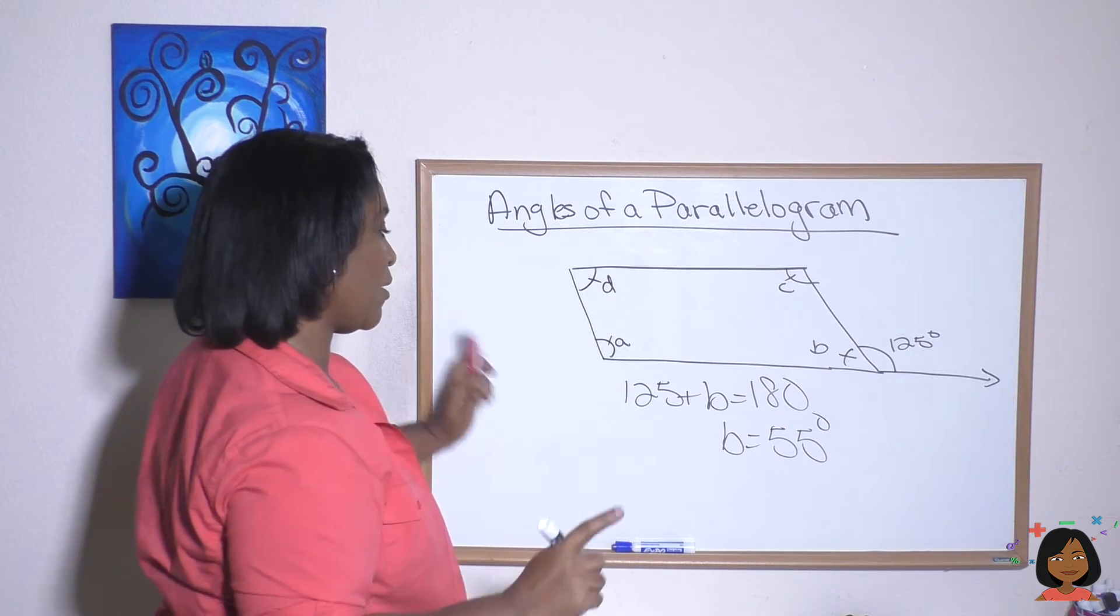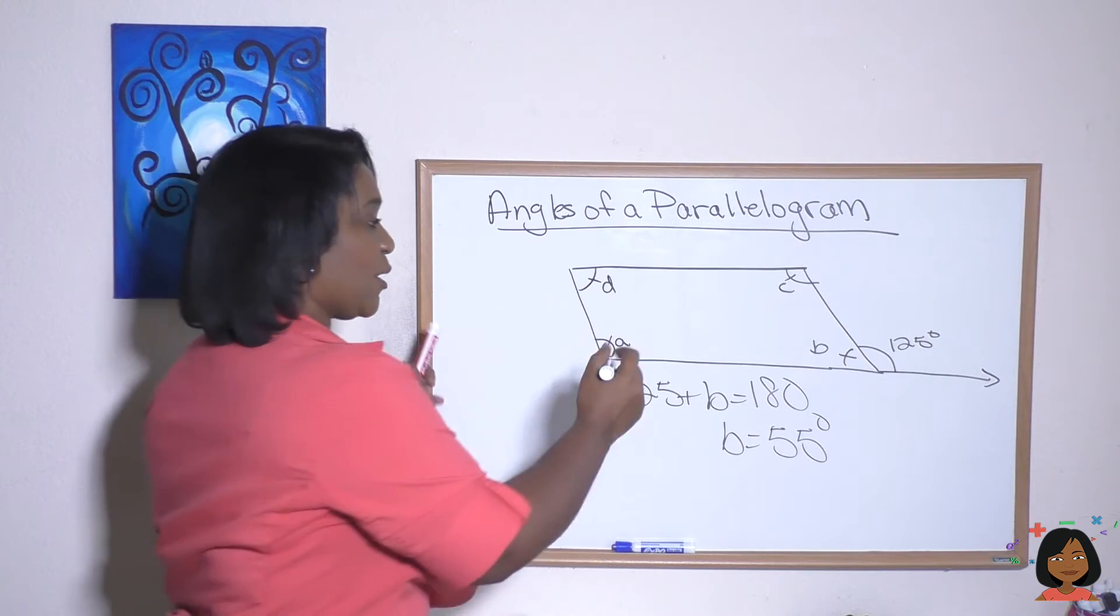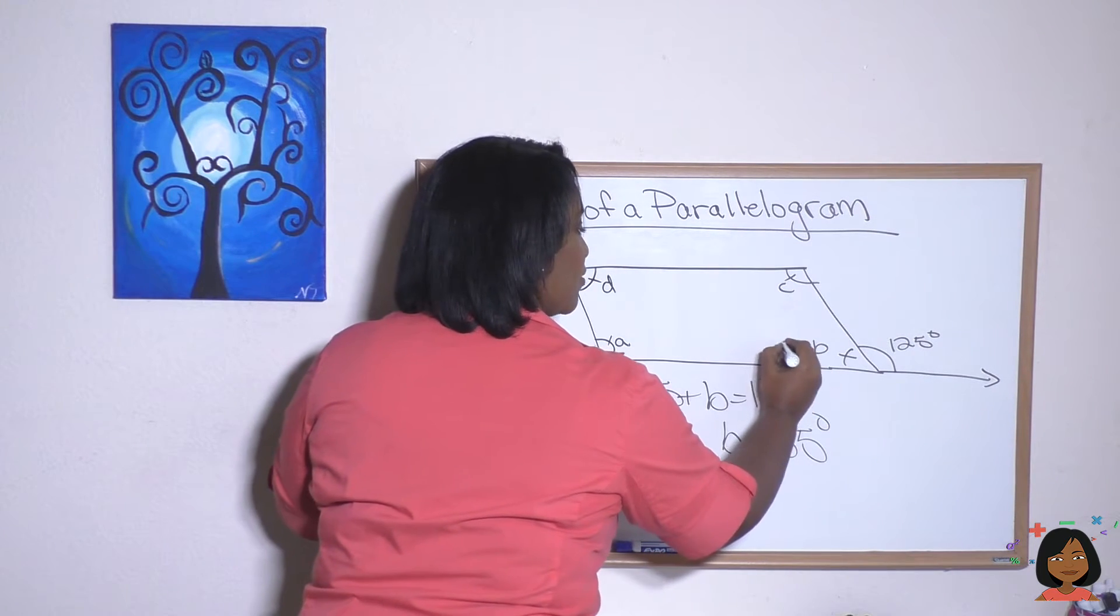Yes, let's make sure. 5 and 2 is 7. Yes, 180. So I can write it in. B is 55.